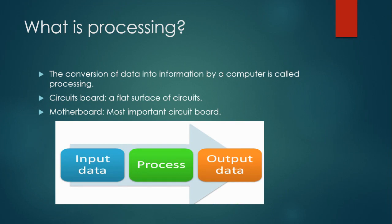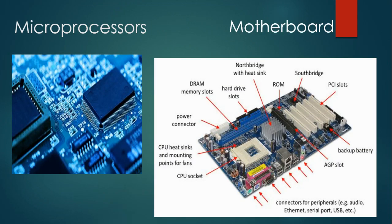Data travels in the computer along circuits. The circuit board is a flat surface on which circuits are laid out. What is a motherboard? A motherboard is the most important circuit board. It carries the most important parts of the computer, such as the CPU.